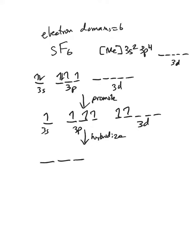And so now I'm going to have six hybrid orbitals. What's left over are a trio of 3d unhybridized orbitals. The number of orbitals has to be conserved. What we started out with has to be the number we ended up with.